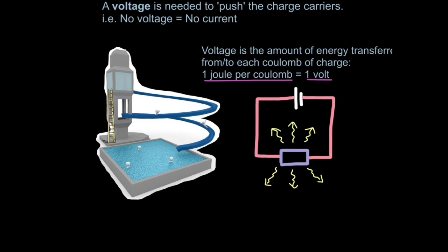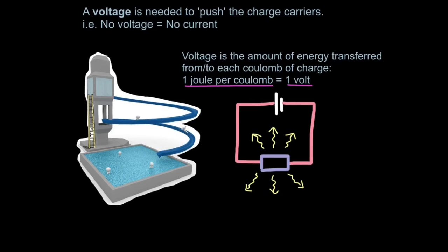If each person represents a coulomb of charge, voltage is effectively the amount of energy transferred from or to each coulomb of charge. In the cell, energy is transferred to each coulomb, and as charge moves through the circuit component, each coulomb transfers its energy out of the system. So a voltage is the amount of energy each coulomb carries — one volt is one joule per coulomb. Remember, joule is the unit for energy, so a volt is really energy per coulomb. This is a common exam question: what is another way of expressing one volt? The answer is one joule per coulomb. For power, it's one joule per second, but we'll look at that later.